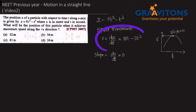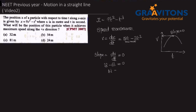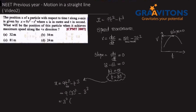So v is equal to 18t minus 3t squared, and setting that equal to zero gives us 18t equals 3t squared, or t is equal to 3 seconds.